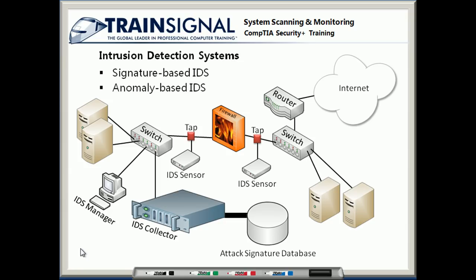Now let's take a look at anomaly-based IDS systems. With anomaly-based systems, you get a network history database instead of an attack database. A network history database collects information about the normal behavior on your network, and over time it establishes a relatively accurate baseline of what regular behavior is. Then, any time there's a deviation from normal behavior, it will be compared against the baseline and a determination will be made as to whether or not that's an attack.